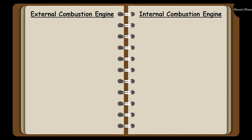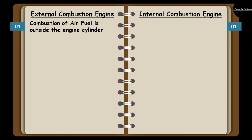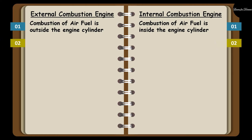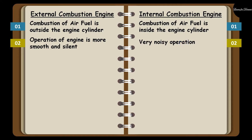Next we are going to see the difference between the external combustion engine and internal combustion engine. The first difference is: the combustion of air-fuel is outside the engine cylinder in an external combustion engine, whereas in case of internal combustion engine, the combustion of air-fuel mixture is done inside the engine cylinder. The second difference is that the operation of the engine is more smooth and silent in case of external combustion engine, but in case of IC engine, the noise level is higher.